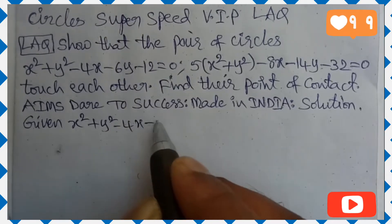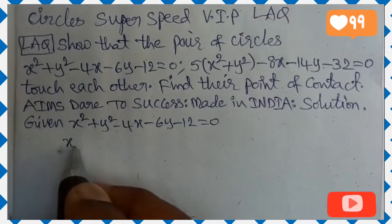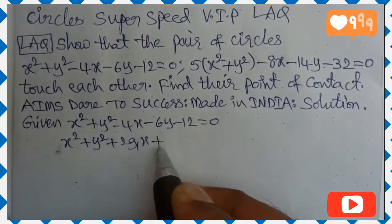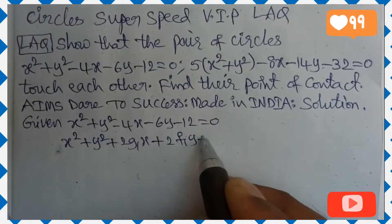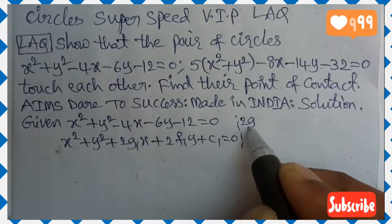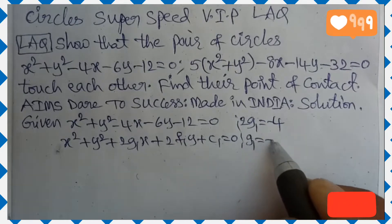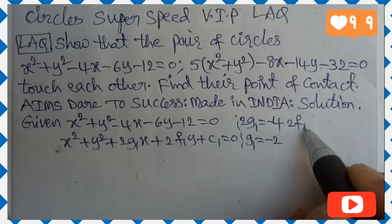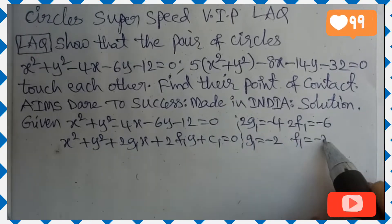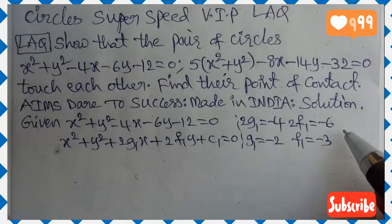Given first circle is x² + y² − 4x − 6y − 12 = 0. Comparing with the standard equation x² + y² + 2g₁x + 2f₁y + c₁ = 0: comparing x-coefficients, 2g₁ = −4, so g₁ = −2. Comparing y-coefficients, 2f₁ = −6, so f₁ = −3.